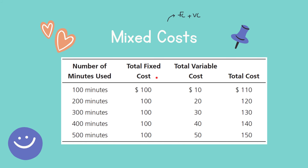The total fixed cost remains constant — for example, you pay a $100 subscription each month regardless of how many minutes you use. The variable cost depends on the number of minutes; with more minutes, total variable cost increases. To get the variable cost per minute, divide $10 by 100 minutes, which equals $0.10 per minute. If you divide $20 by 200 minutes or $30 by 300 minutes, you get the same answer — $0.10 per minute stays constant.